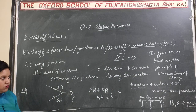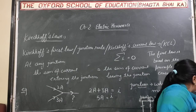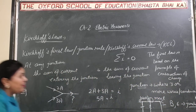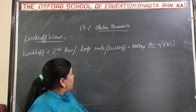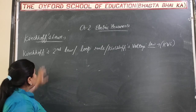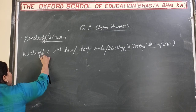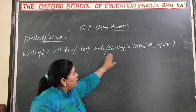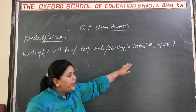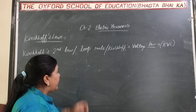Now, the second law. We will discuss Kirchhoff's second law. Kirchhoff's second law is also known as the Loop Rule, or Kirchhoff's Voltage Law, and the short form is KVL.